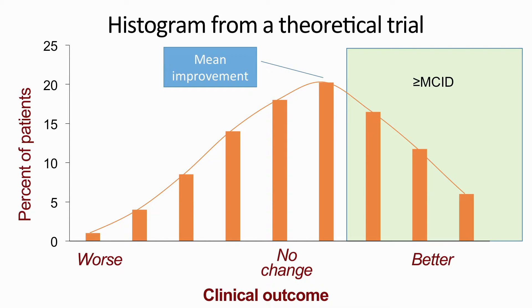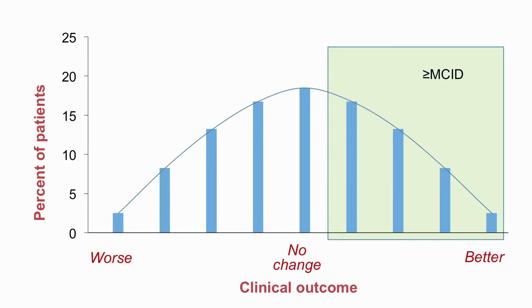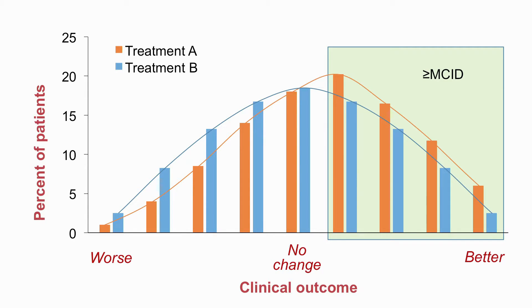So now let's look at how a responder analysis is carried out. Here's a comparative treatment which, on average, produced no change in PRO score. If we now look at treatment A, we see that above the MCID, proportionately more patients improved with treatment A than with the comparator treatment B.